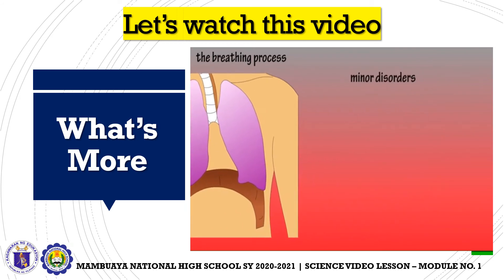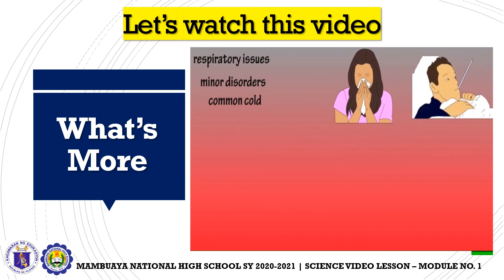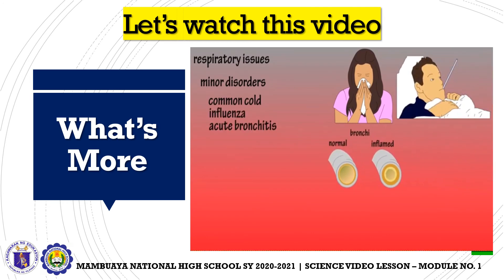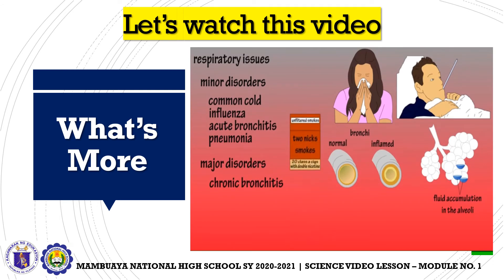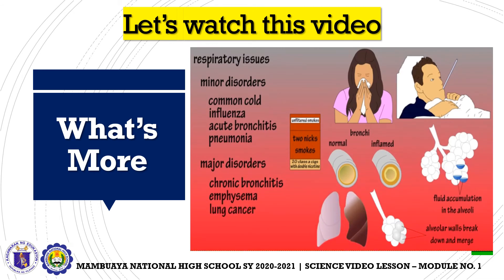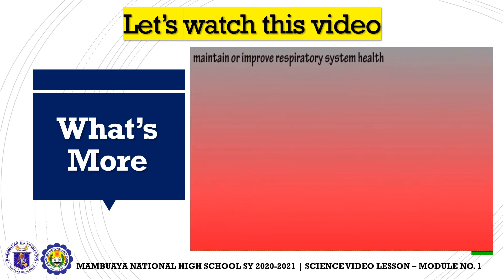Some minor respiratory disorders include the common cold, influenza, acute bronchitis — which is inflammation of the bronchi — and pneumonia, which is inflammation of the bronchioles and alveoli. Some of the more damaging disorders include chronic bronchitis, where the bronchi become inflamed and narrowed, mainly caused by tobacco smoke; emphysema, where the alveoli become overstretched; and lung cancer, which in almost 9 out of 10 cases is caused by tobacco smoke.